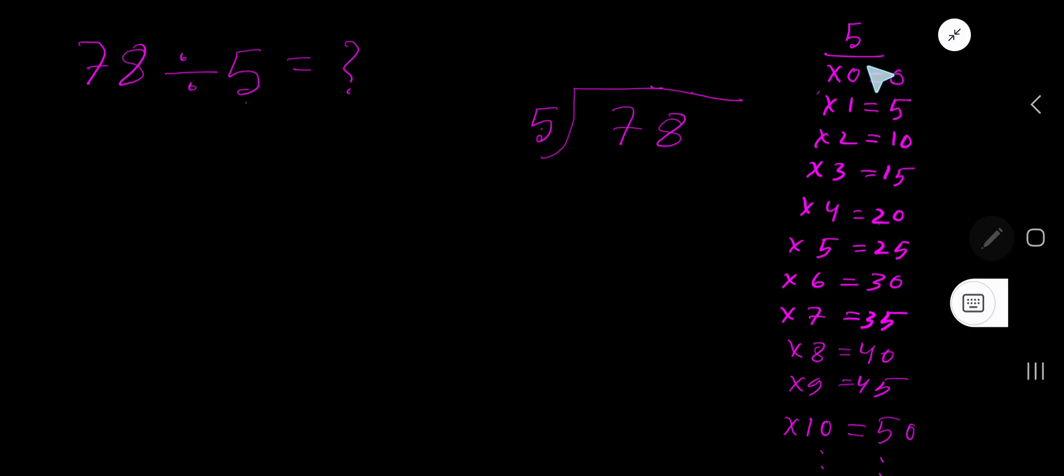To find out the multiplication table of 5, just add 5 with the previous step: 0 plus 5 is 5, 5 plus 5 is 10, 10 plus 5 is 15, 15 plus 5 is 20, 20 plus 5 is 25. This process will continue.